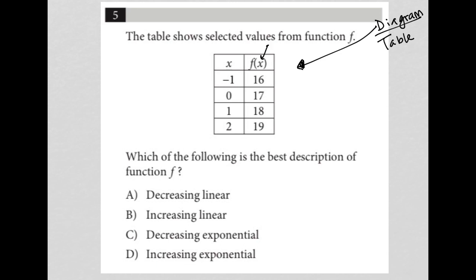f of x is the same as y. So we have these ordered pairs. When x is negative 1, y is 16, or f of x is 16. It's the same thing. The question says the table shows selected values from function f. It goes on to say, which of the following is the best description of function f?